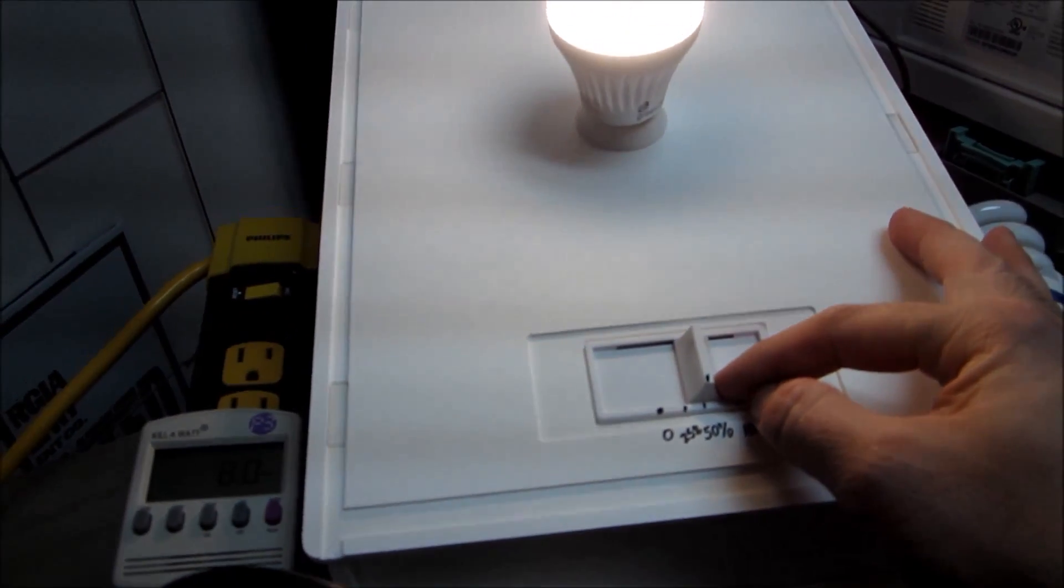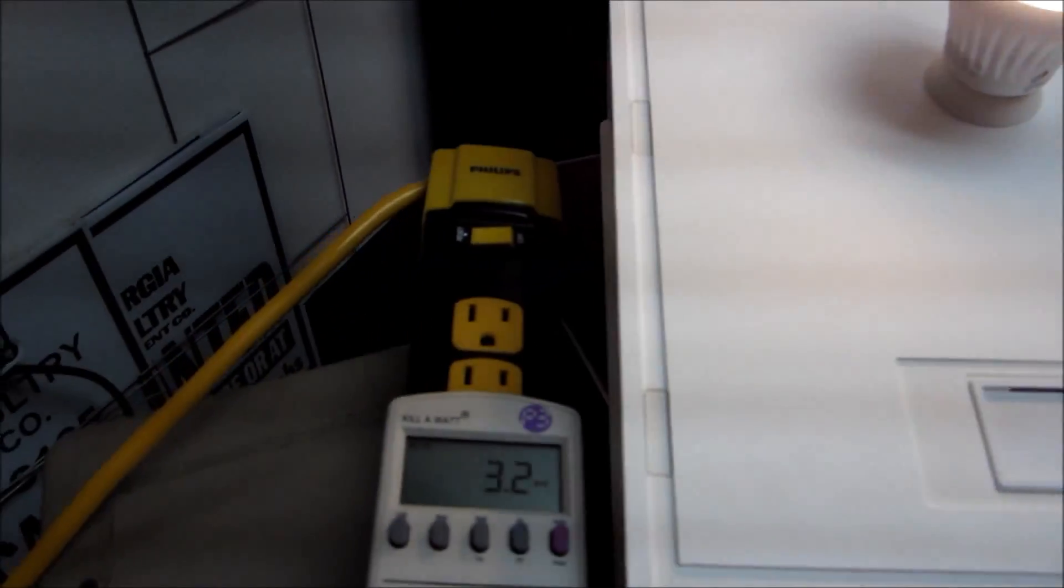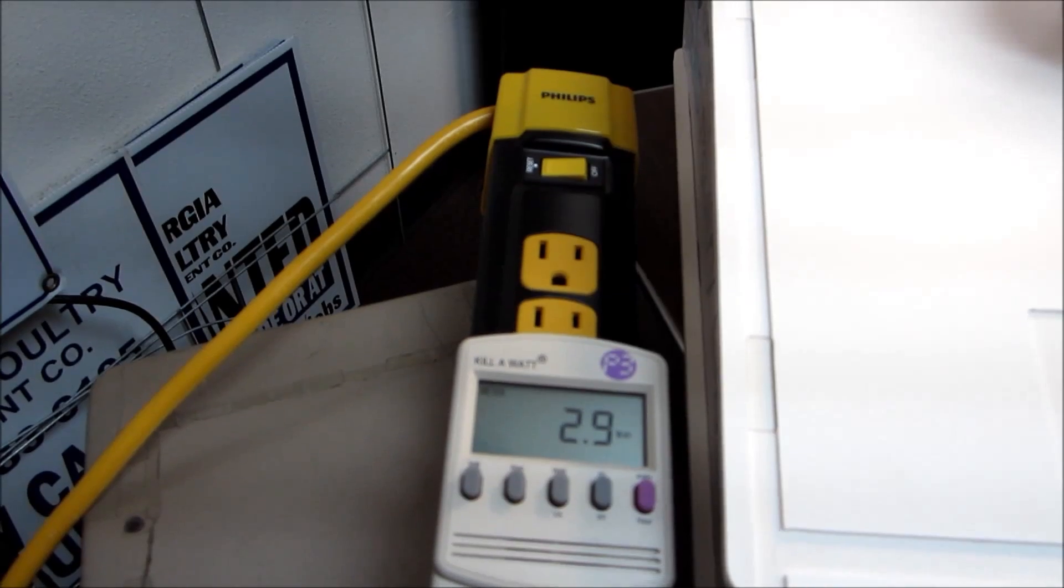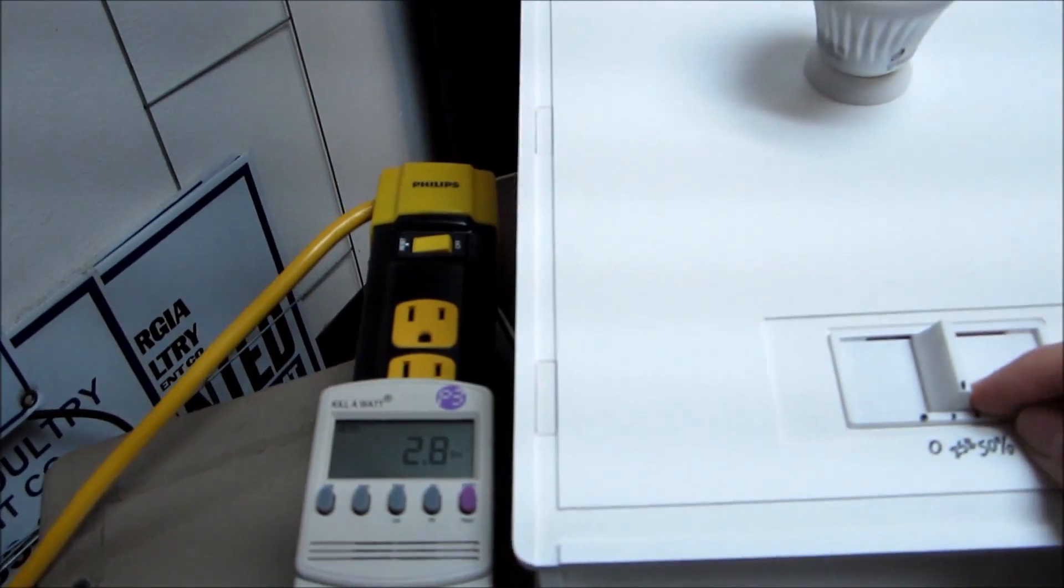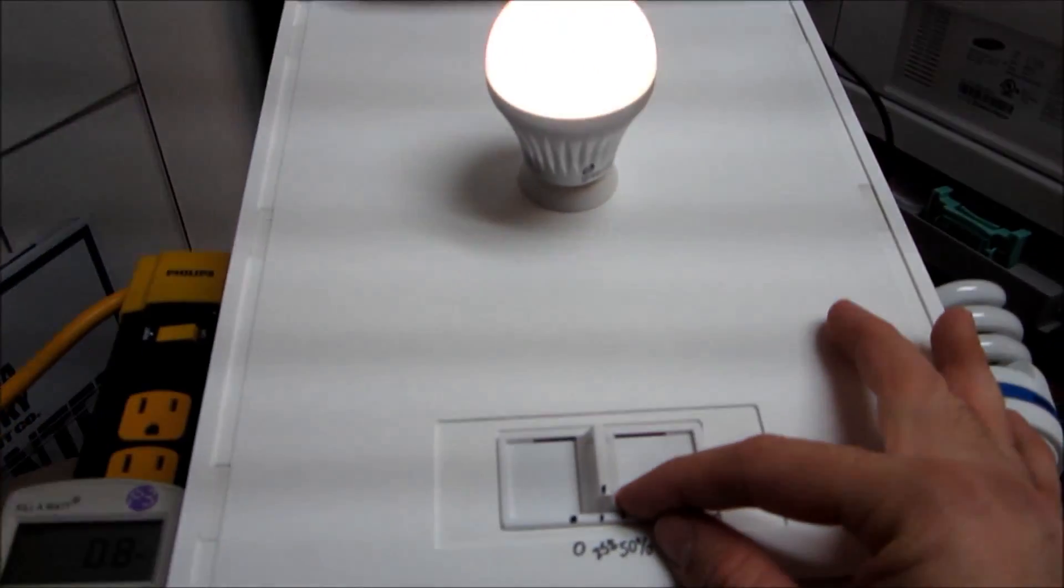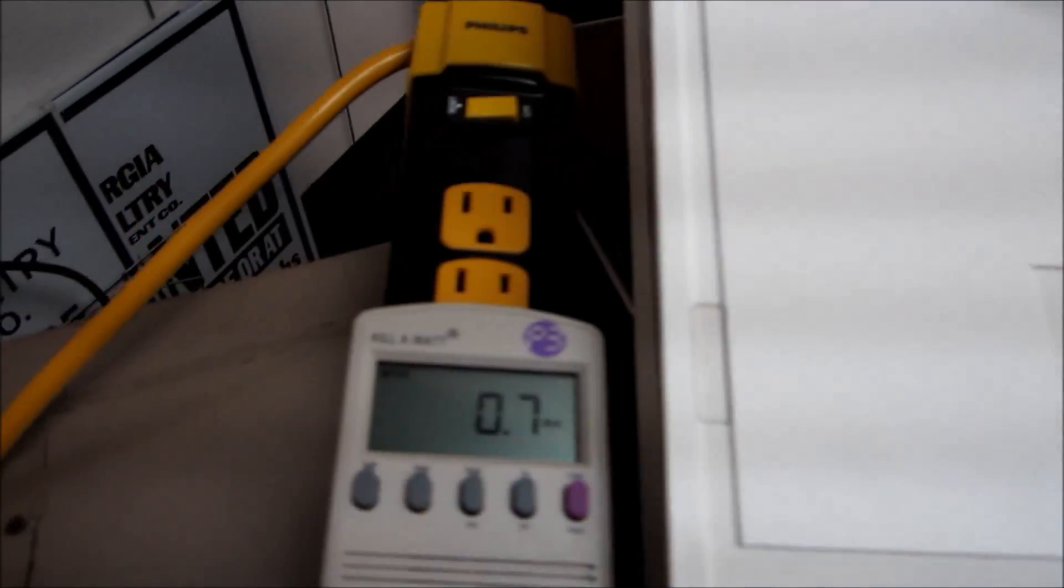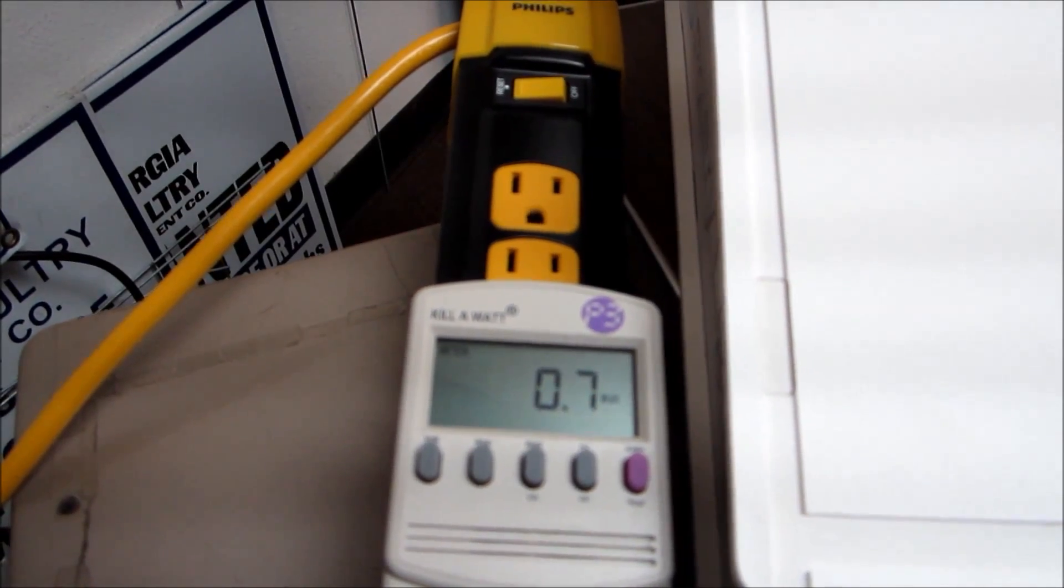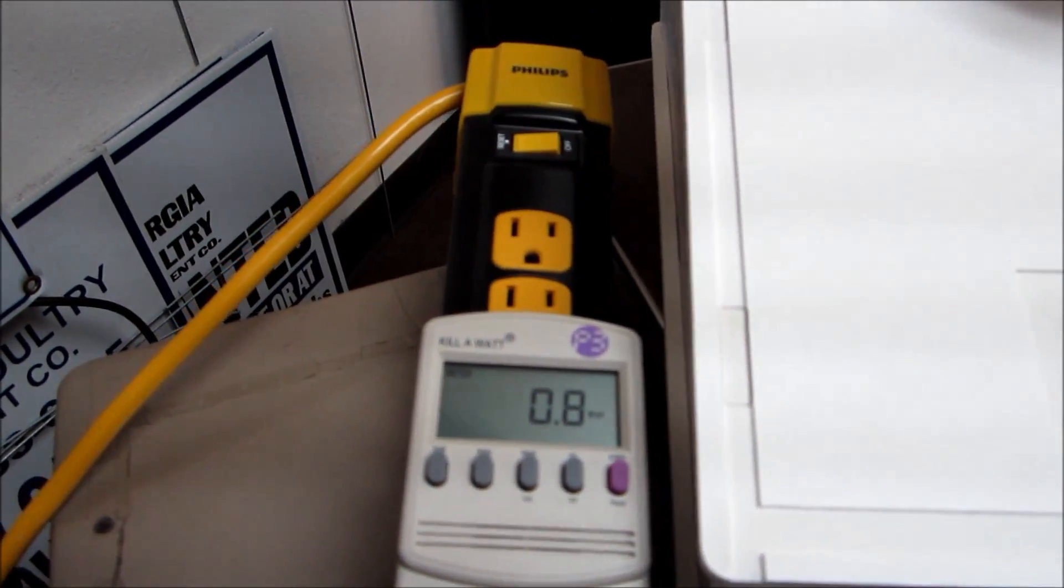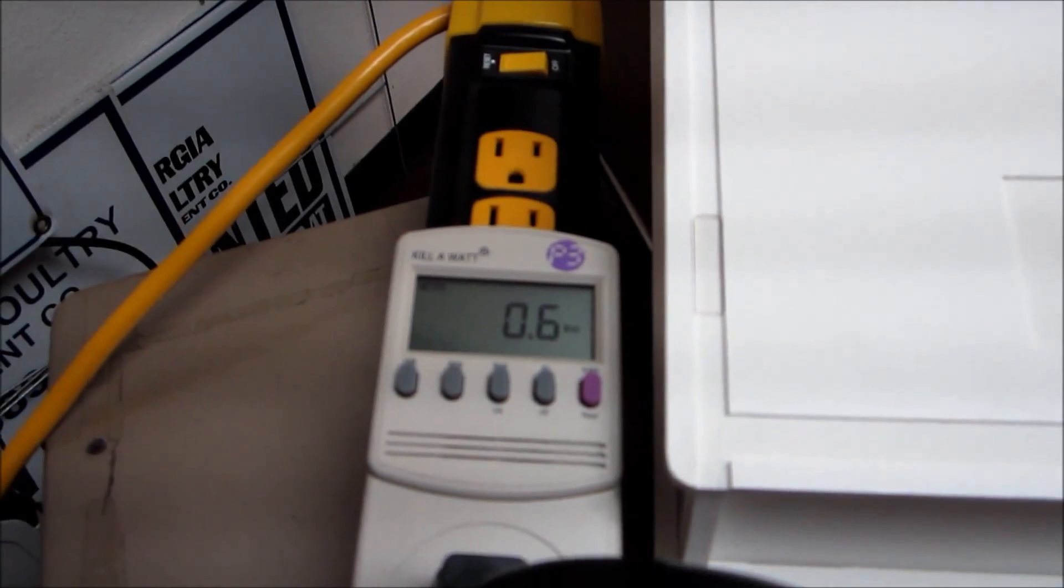Now dim down to 50% it is using basically 3 watts of electricity. And at 25% we are using basically less than 1 watt of electricity per bulb. Now just keep in mind this is measuring just that one light bulb here and no other electricity is being drawn off of this cord other than that one bulb.